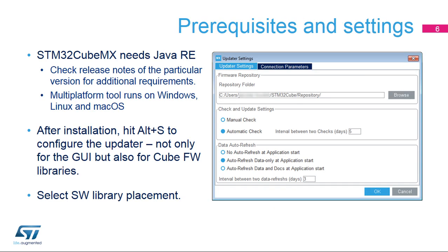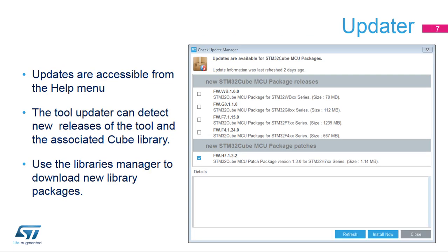Download the STM32CubeMX installer for free from the ST website and install it. Then set your preferences in the settings menu — one menu for the updater and library download (ALT+S), and another for code generation and integration with development tool chains (ALT+P). Once this setup is completed, a new project can be created. If the internet connection is configured correctly, the tool can update itself as well as the code libraries used for generating the project workspaces.